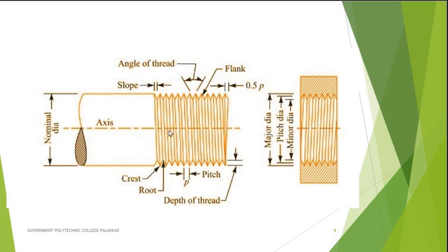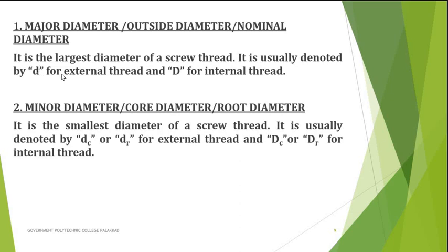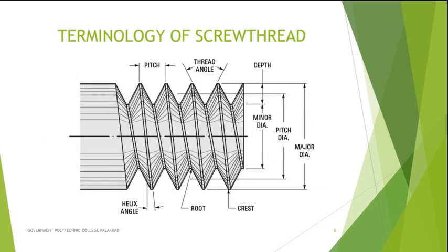Let's start with the bolt, because the thread appears on the surface of the bolt, while for a nut the thread is internal. So we have internal thread for nuts and external thread for bolts. Major diameter is represented by small letter d for external thread and capital D for internal thread. Another term is minor diameter, or core diameter, or root diameter — it is the smallest diameter of a screw thread. It is denoted by dc (c for core diameter), or small d for external thread and capital D with suffix C or suffix R for internal thread.